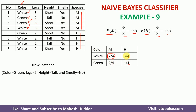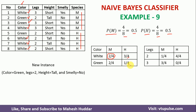For the H class, out of 4 examples, white is present 3 times, so P(color=white | H) = 3/4. Green appears only 1 time, so P(color=green | H) = 1/4.